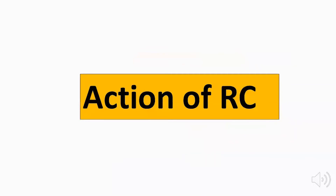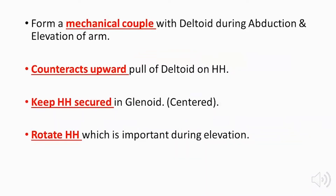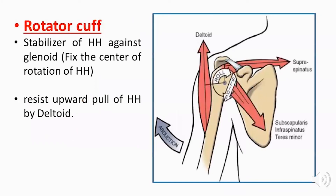The function of the rotator cuff is to form a mechanical couple together with the deltoid, allowing abduction and elevation of the arm. They also prevent the upward pull of the deltoid on the humeral head, keep the humeral head centered in the glenoid, and rotate the humeral head, which is important during elevation. As seen in this diagram, the deltoid exerts an upward pull on the humeral head, while the supraspinatus centers the humeral head on the glenoid and the subscapularis, infraspinatus, and teres minor act in the opposite direction to form a force couple preventing upward displacement.